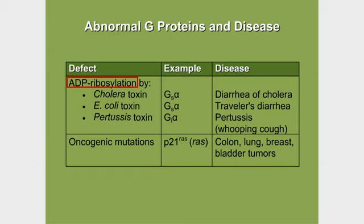To conclude: all three toxins ADP ribosylate the alpha subunit of a respective G protein. The consequence of all three toxins resulting in ADP ribosylation of the alpha S subunit is increased cyclic AMP in the cell.